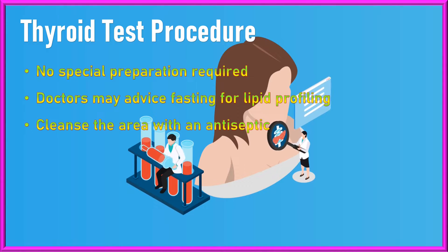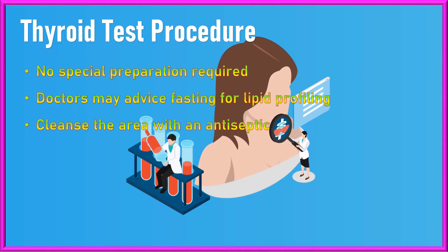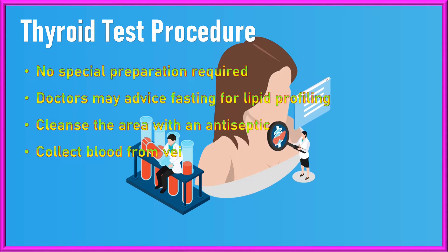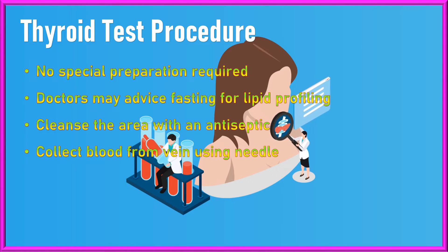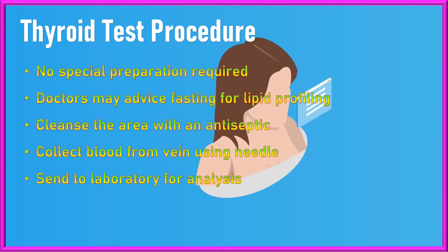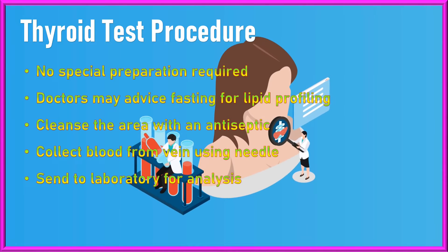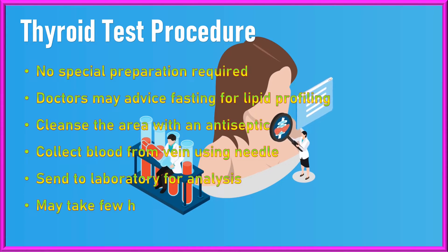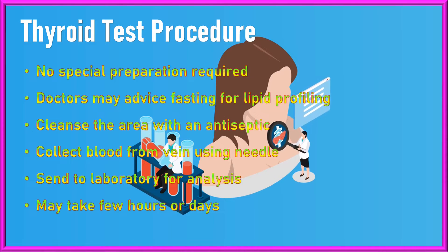A healthcare professional will cleanse the area where the blood will be drawn — usually the arm — with an antiseptic, and then use a needle to collect a small sample of blood from a vein. The blood sample is sent to a laboratory for analysis, and depending on the specific test ordered, the results may be available within a few hours or a few days.